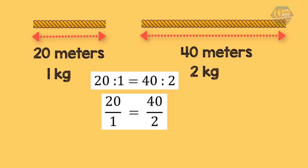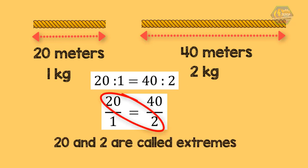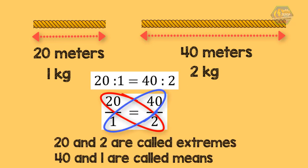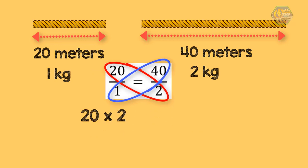To know if the two ratios are equal, let's locate first the extremes and means. 20 and 2 are the extremes, and 40 and 1 are the means. Product of extremes is always equal to the product of means. Therefore, the extremes 20 times 2 is equal to 40, and the means 40 times 1 is equal to 40. Therefore, the two ratios are equal, and the terms are proportion.